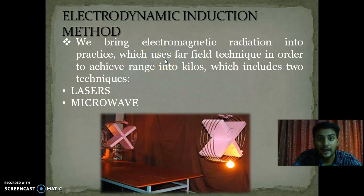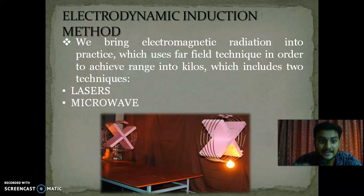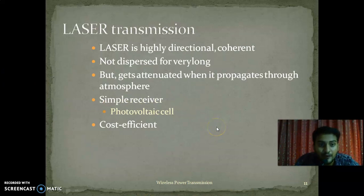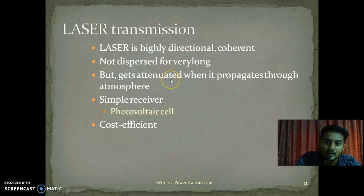Next we can check upon the electrodynamic induction method. We bring electromagnetic radiation into practice which uses far-field technique in order to achieve range into kilometers, which includes two techniques: first, lasers, and second, microwave. Let's first check the laser method. Laser is highly directional and coherent, not dispersed for very long, but gets attenuated when it propagates through the atmosphere. A simple receiver is required — a photovoltaic cell — and it is cost efficient too.